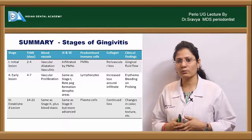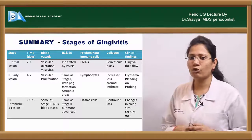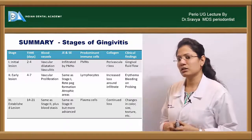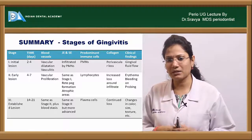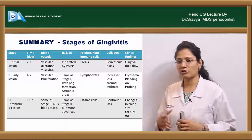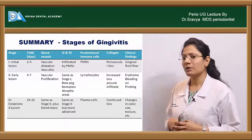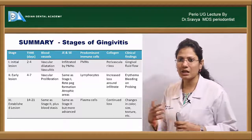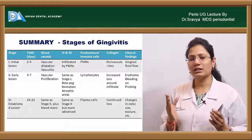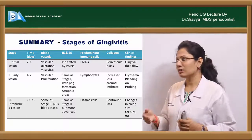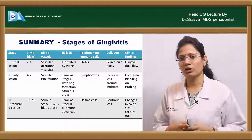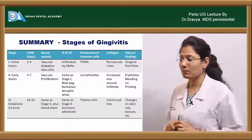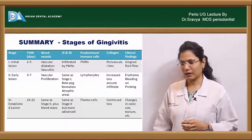The early lesion appears between 4 to 7 days of plaque accumulation. There is increased vascular proliferation with vasculitis, rete peg formation, and atrophic areas in the sulcular and junctional epithelium. The predominant cell type is T lymphocytes — 75% of the cells are T lymphocytes. There is loss of perivascular collagen and collagen around the inflammatory infiltrate. Clinical findings include erythema, increased bleeding on probing, and increased gingival crevicular fluid.